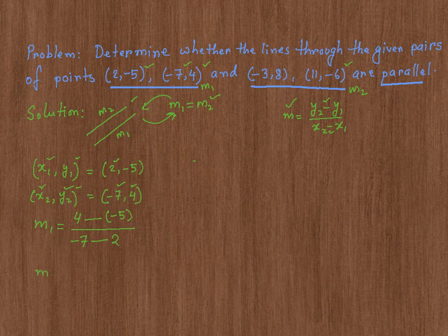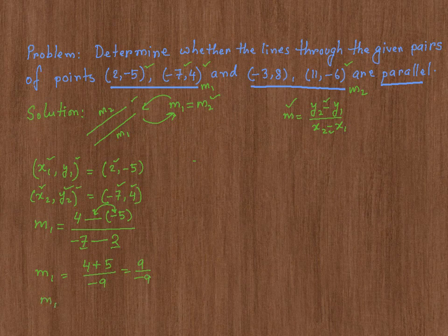Now I simplify it further. M1 is equal to 4, and negative and negative is going to make it positive, so plus 5, divided by negative 7 minus 2 is negative 9. That gives us 9 over negative 9, which is negative 1. So the first slope M1 is negative 1.